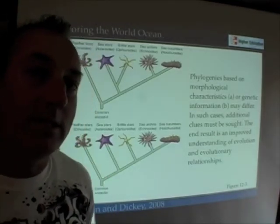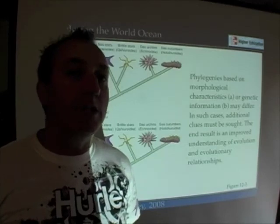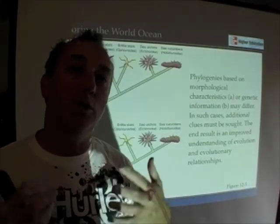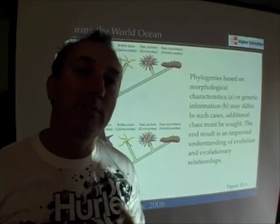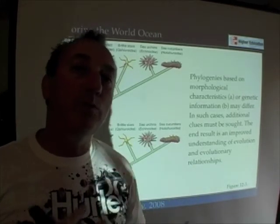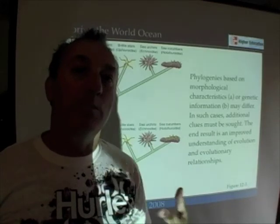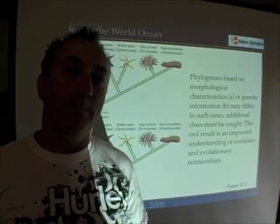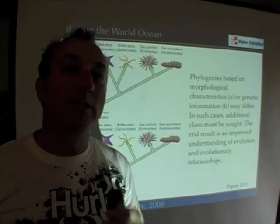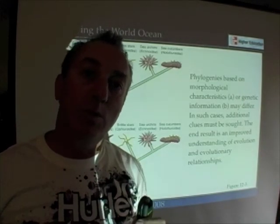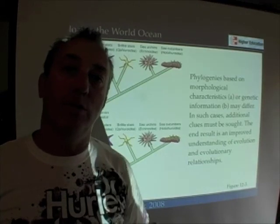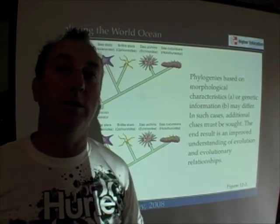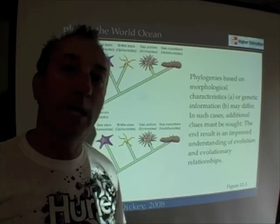One important point is that these phylogenetic trees and comparisons — whether biochemical, morphological, developmental, or genetic — are never static. As we improve our methods and gather more data, we may revise the phylogenetic tree. But the key is that all these different kinds of evidence point to life having a common ancestor, having originated from a very similar kind of organism everywhere on Earth. That's remarkable.